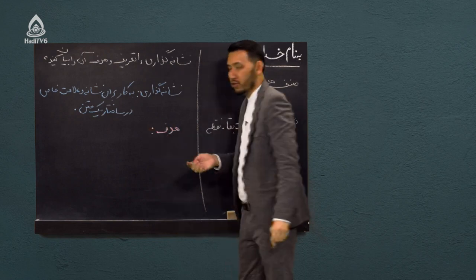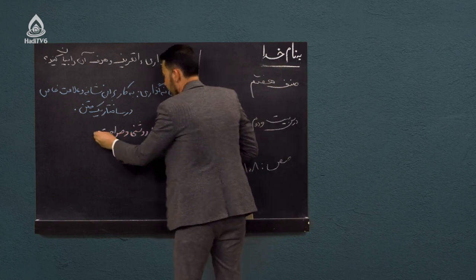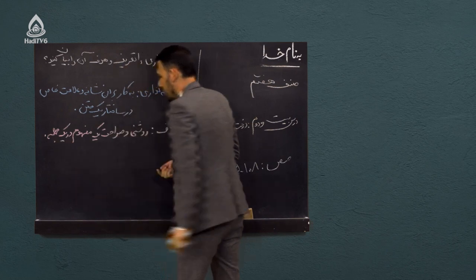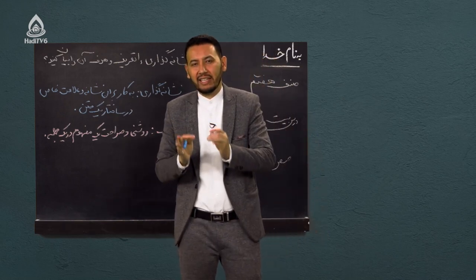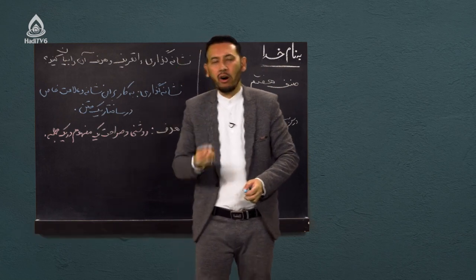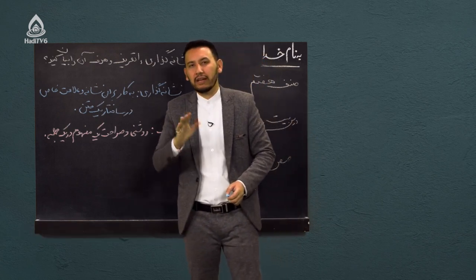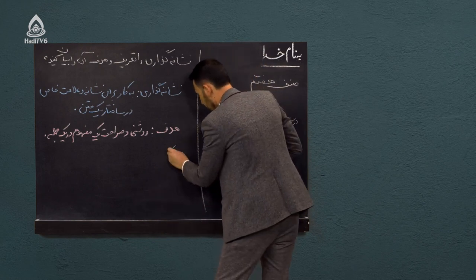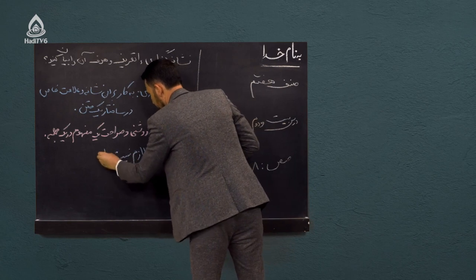هدف نشانگذاری چیست؟ هدفش در واقع روشنی و صراحت یک مفهوم در یک جمله است. هدف اصلی نشانگذاری این است که وقتی از نشانه استفاده می‌کنید، معنا و مقصود نویسنده را به‌طور کاملاً روشن و واضح بفهمانید. برای بیان بهتر، یک مثال مشهور می‌زنیم: «بخشش لازم نیست اعدامش کنیم».